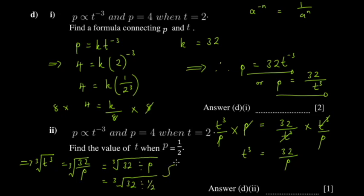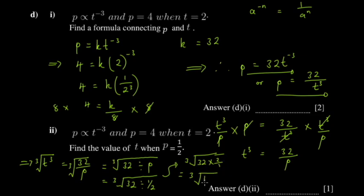To get rid of the division by one half, multiply by its reciprocal 2 over 1. So we get the cube root of 32 multiplied by 2, which is the cube root of 64. The cube root of 64 is 4, because 4 times 4 is 16, and 16 times 4 is 64. So t equals 4.